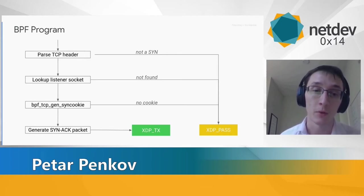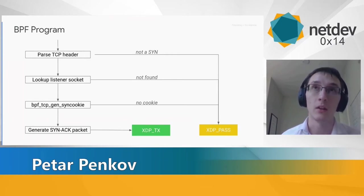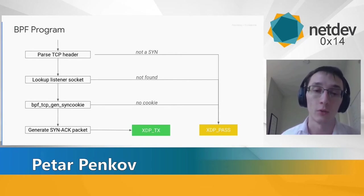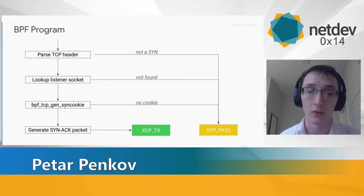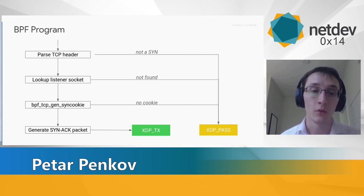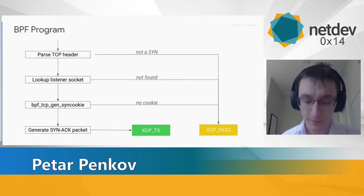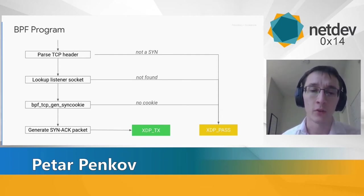If we cannot issue a SYN cookie, we want the kernel to establish connections with request sockets as usual. If we do issue a SYN cookie, we generate the corresponding SYN-ACK packet in place using the same buffer as the received packet. We then do accounting and transmit the packet back on the same interface.